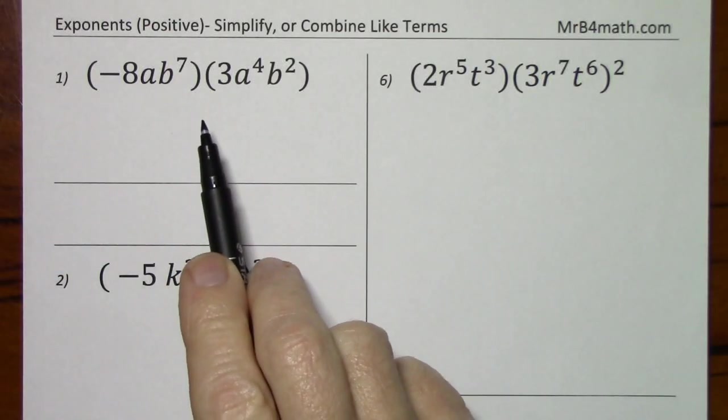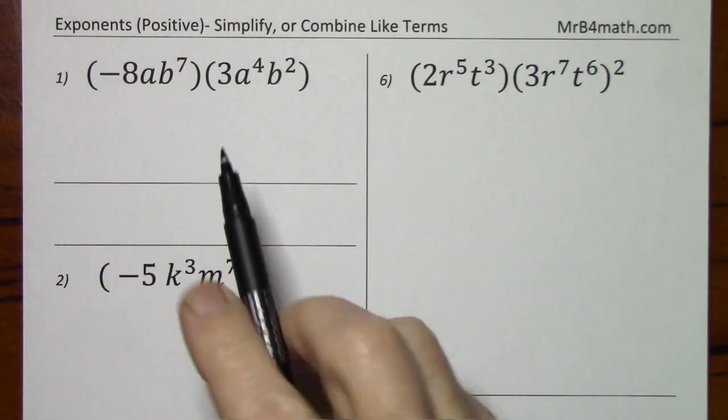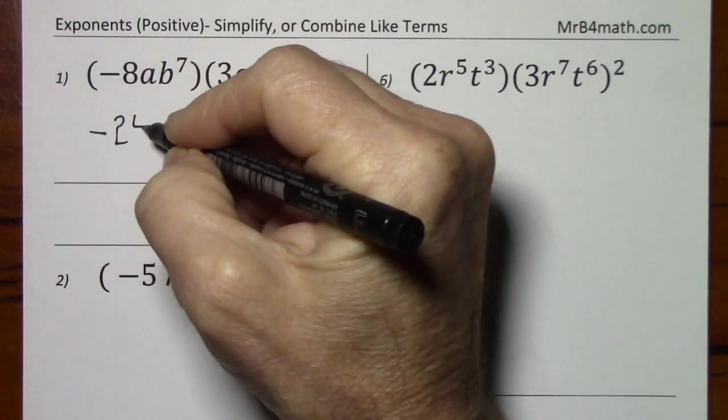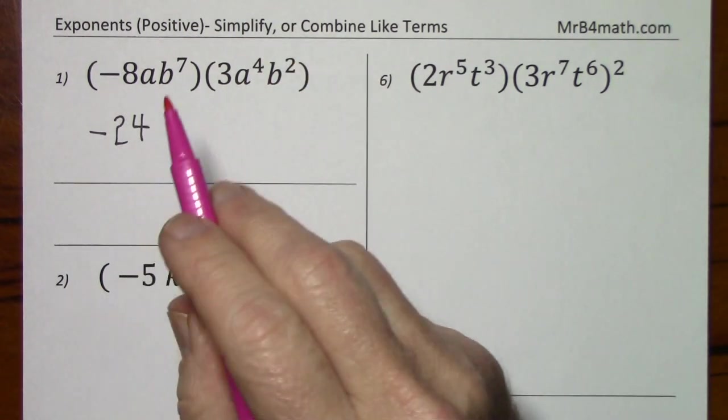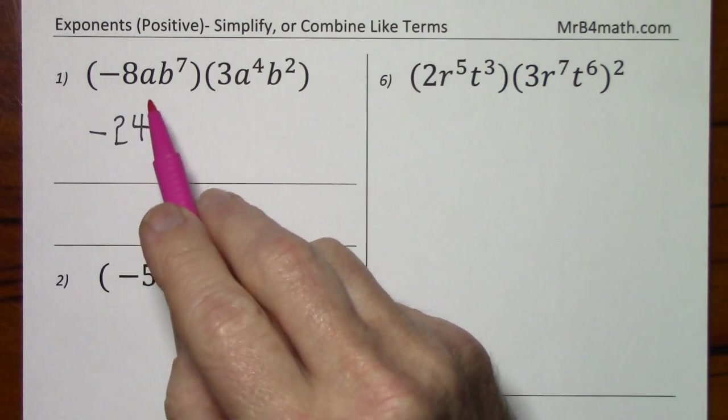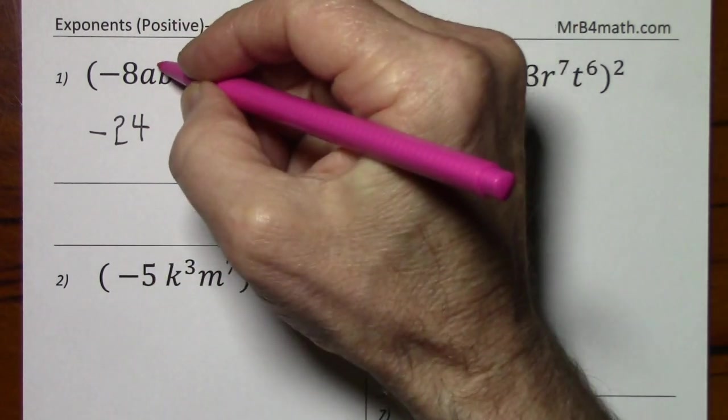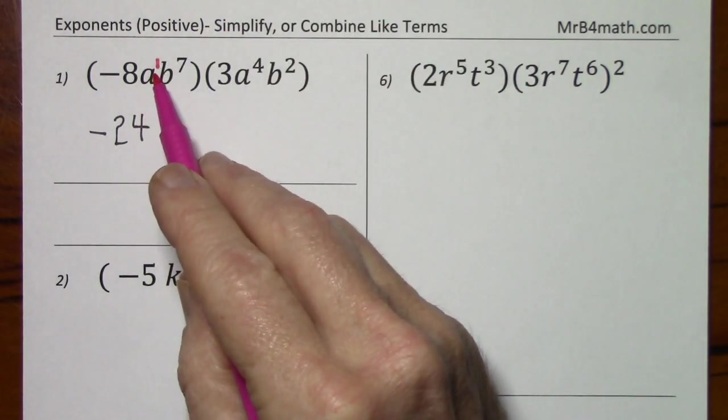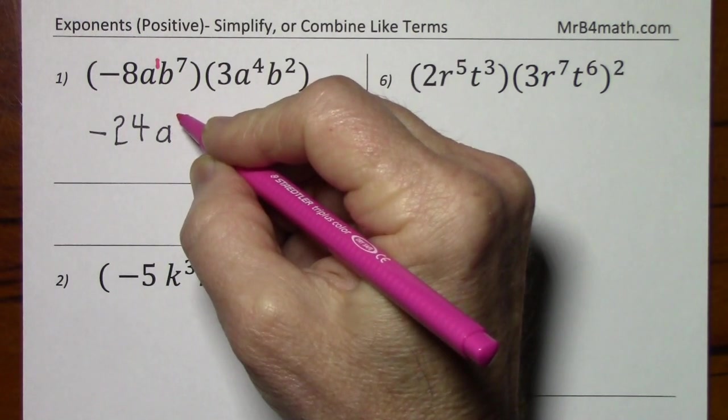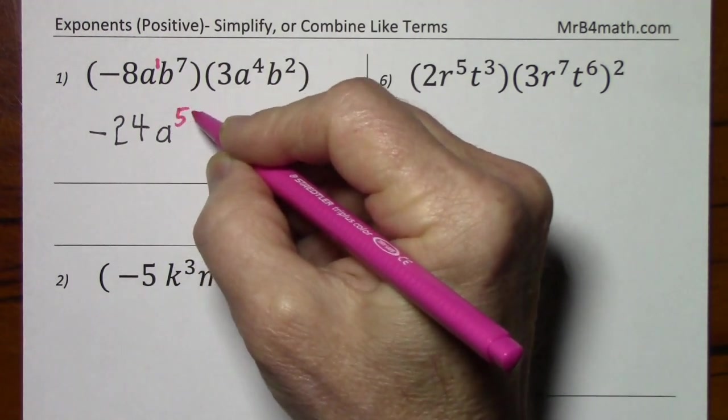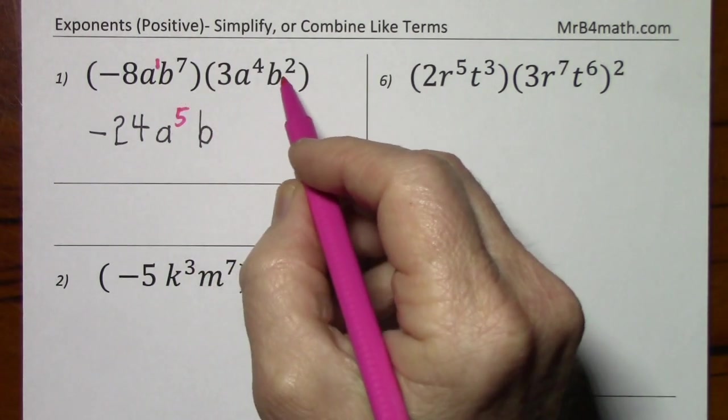Looking at number 1, we're multiplying, parenthesis next to parenthesis, so negative 8 times 3 is negative 24. The negative 8 and 3 we just multiplied, but with the variables, since these are like bases, we can add exponents. Remember, this is a to the first power if nothing's written, so that's a to the 1 plus 4 is 5. B to the 7 plus 2.